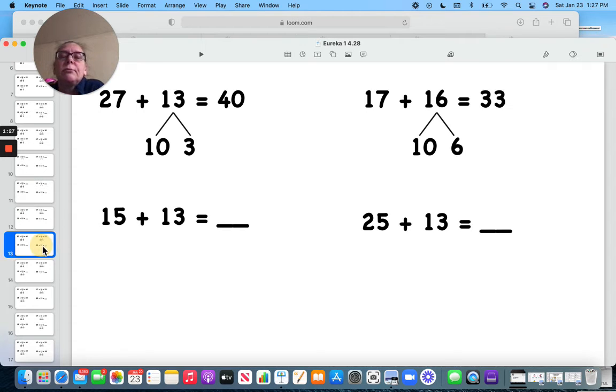Here we have 10 and 6. 10 and 6 would be 27, 28, 29, 30, 31, 32, 33.